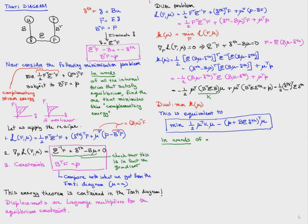So we get this unconstrained minimization. In words: of all the displacements, find the one that minimizes the total potential energy. So the total potential energy principle is the dual of the total complementary potential energy principle.